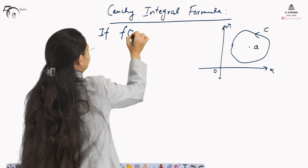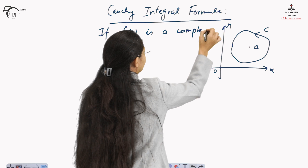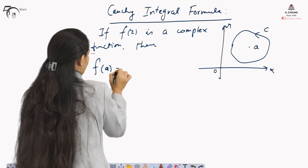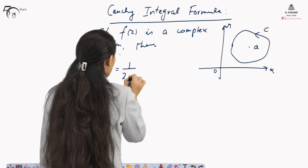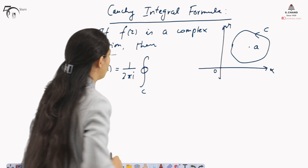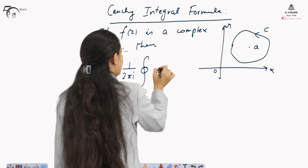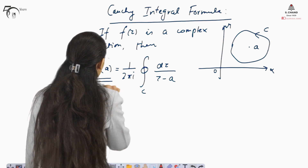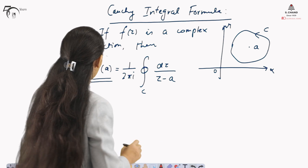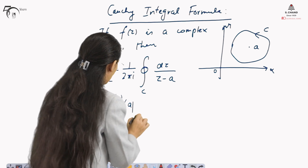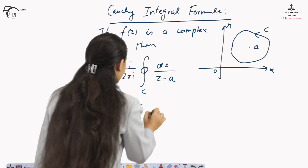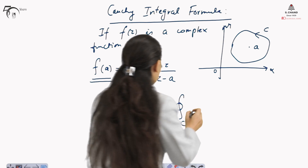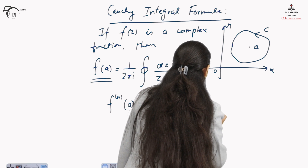If f(z) is a complex function, then the value of the function at z equals A will be calculated as 1 over 2πi, integrated over the closed curve C, f(z) dz over (z minus A). The nth derivative of the function at z equals A will be factorial n over 2πi, integrated over C, f(z) dz over (z minus A) raised to the power n plus 1.